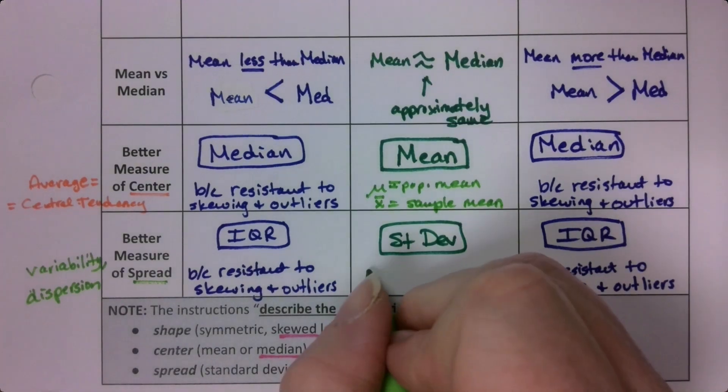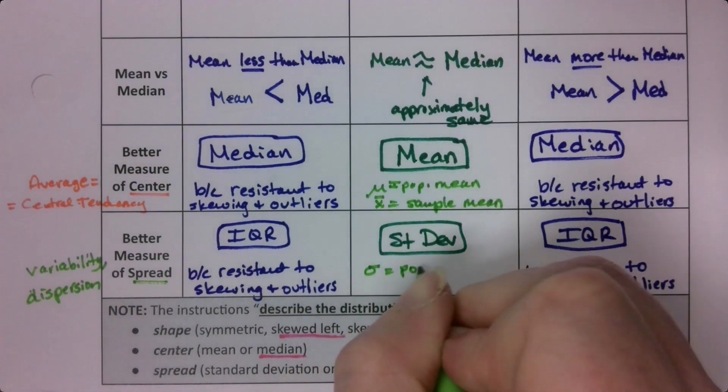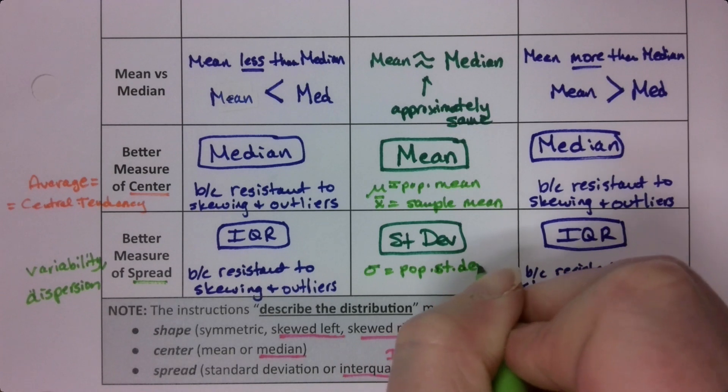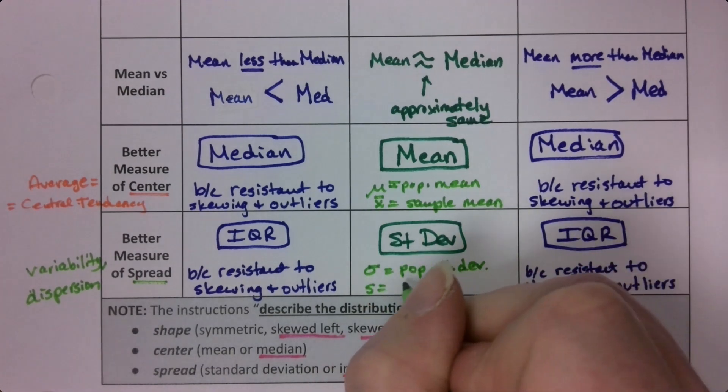Standard deviation is sigma if it's a population standard deviation, and s if it's a sample standard deviation.